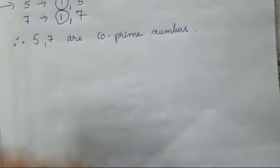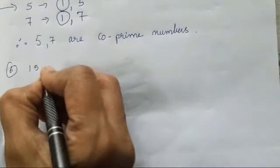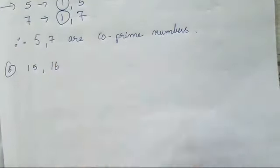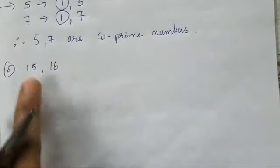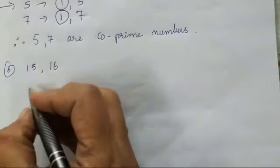Now, the sixth one is 15 and 16. Now, you will see 15 and 16. They are two consecutive numbers. Therefore,